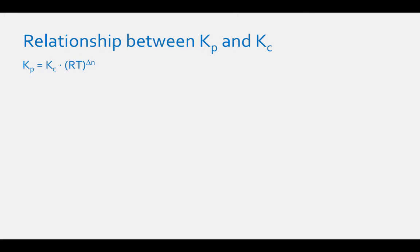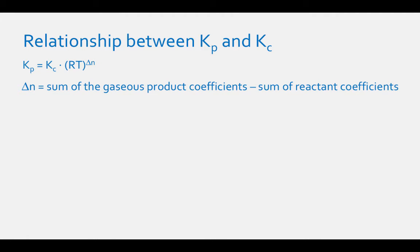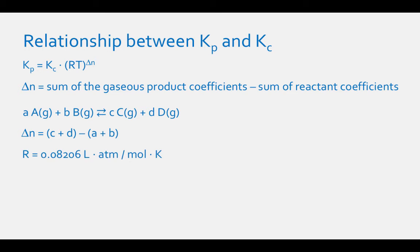The relationship between Kp and Kc is: Kp equals Kc times the gas constant times temperature raised to the delta N, where delta N equals the sum of all gaseous product coefficients minus the sum of the gaseous reactant coefficients. For the generic equation, delta N equals C plus D minus A plus B. The value of R to use is 0.08206 L·atm/(mol·K), and temperature must be in Kelvin. This ensures Kp and Kc are unitless.